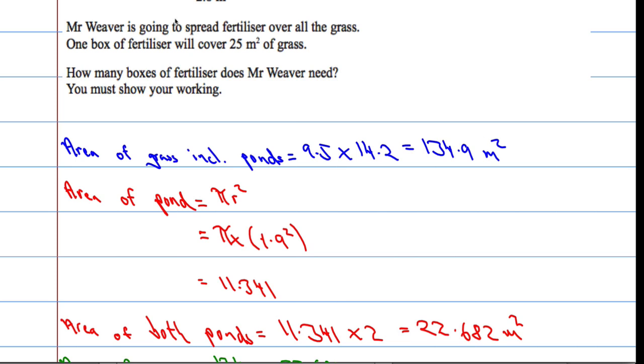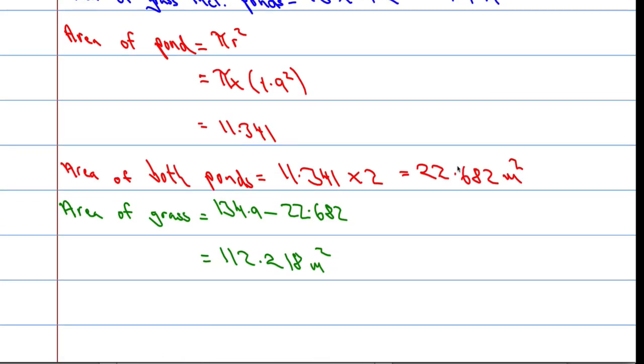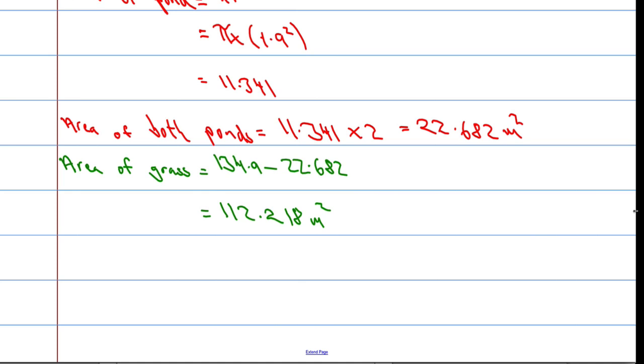Finally, how many boxes of fertilizer will you have to cover? So, each box covers 25 meters squared of grass. And that means you must buy 5 boxes.